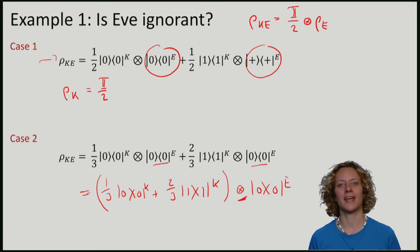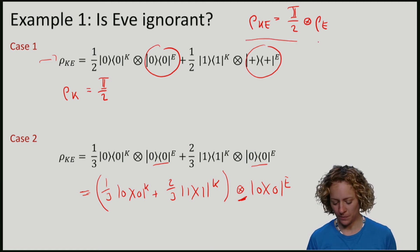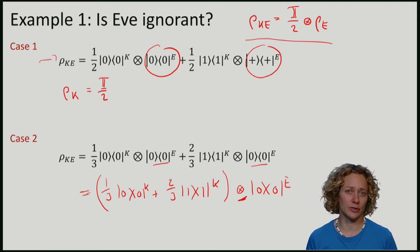Nevertheless, as you can see, the state does not fulfill our condition. Because we don't have the maximally mixed state on k, but instead we have a state that is zero with probability one-third and one with probability two-thirds.